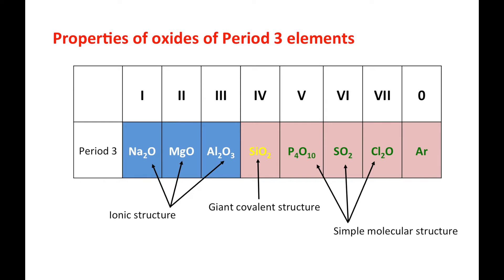Metallic oxide has metallic structure. Silicon dioxide is giant covalent structure. The other non-metal oxides are simple molecular structure.